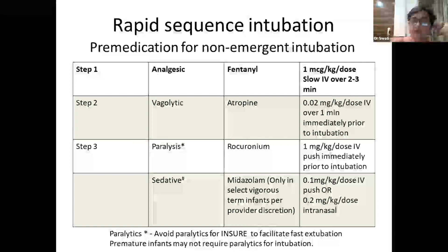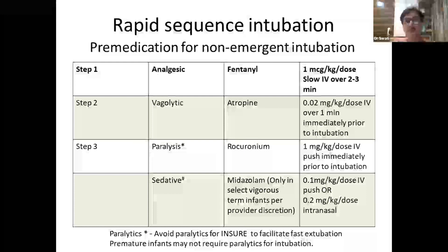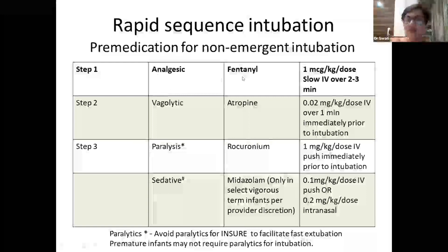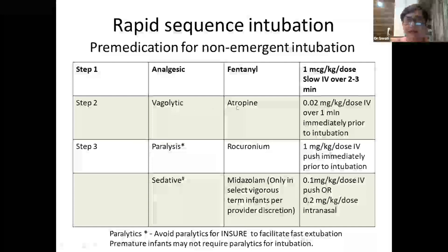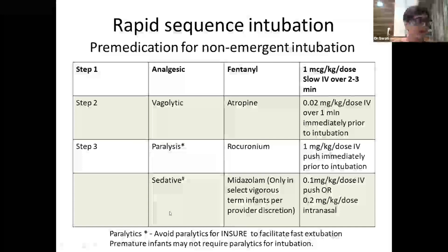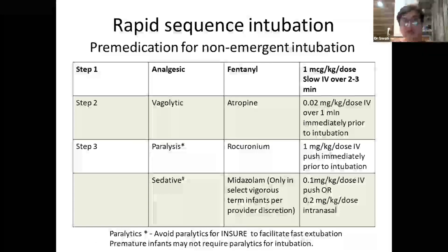Rapid sequence intubation (RSI) is pre-medication for a non-emergent, planned intubation in the NICU. Step one: give an analgesic such as fentanyl, followed by a vagolytic like atropine. Paralysis is optional; if chosen, rocuronium can be used. However, in preterm babies who are to receive surfactant, paralyzing the baby is avoided to facilitate rapid extubation.